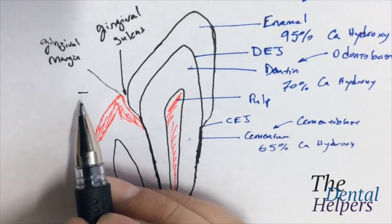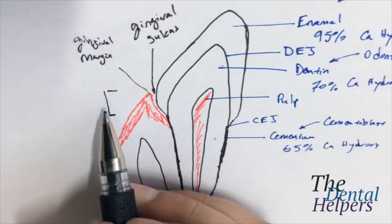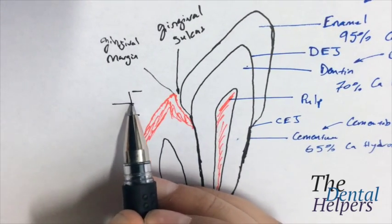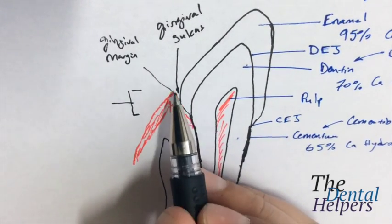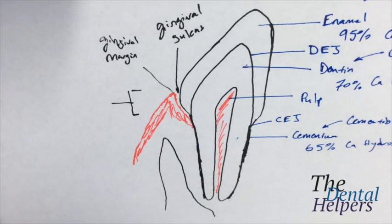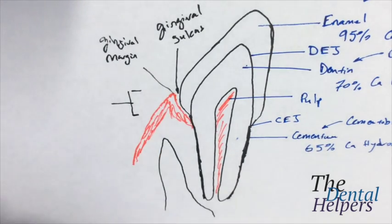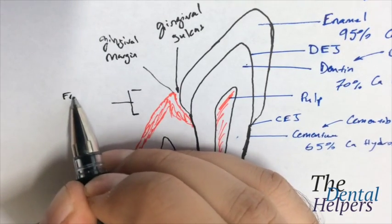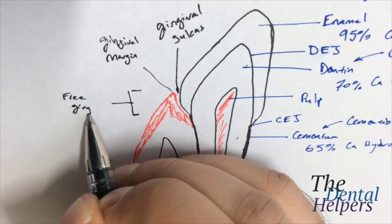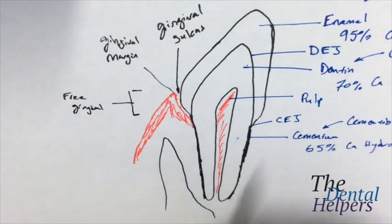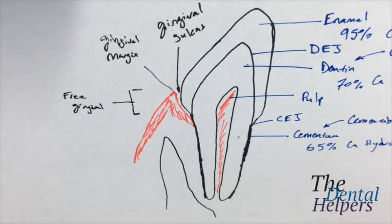So now you're probably wondering, what's the next set of names? So right here, what we have, the area that's not attached to the tooth, or the gum that's not attached to the tooth, is called the free gingiva. It could also be called the unattached gingiva. Very simple.